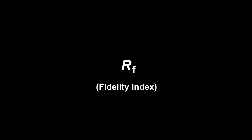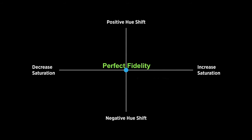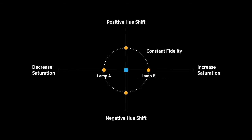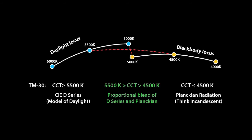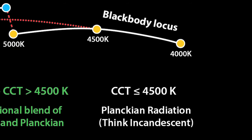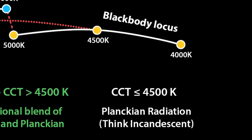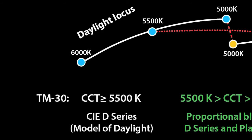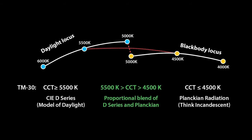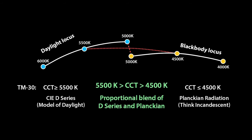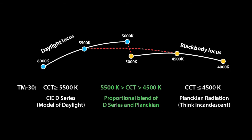RF is the TM30 fidelity index. It functions in a very similar way to CRI, just telling us the magnitude of the similarity between the test and the reference source. You could use RF, for example, if you have a lighting installation where you have incandescent lamps and you're trying to match the exact color of that with LEDs. In TM30, we're using the same reference sources as with CRI. At CCTs below about 4500K, we're using Planckian or black body radiation — essentially like an incandescent lamp. Above 5500K, we're using a model of daylight, just like the sky outside. And in between, the one difference with CRI is that we're actually blending between 4500 and 5500K instead of a sharp cutoff right at 5000K.